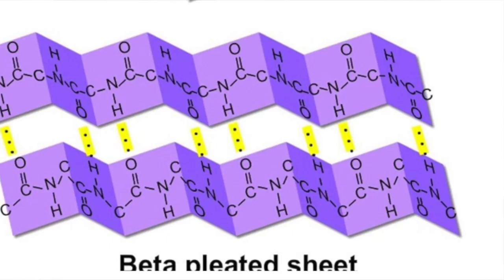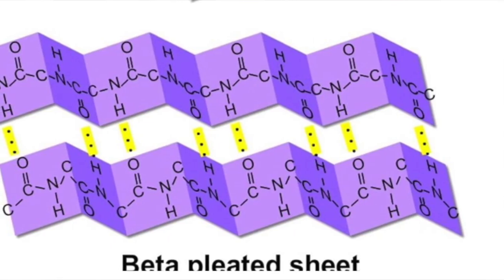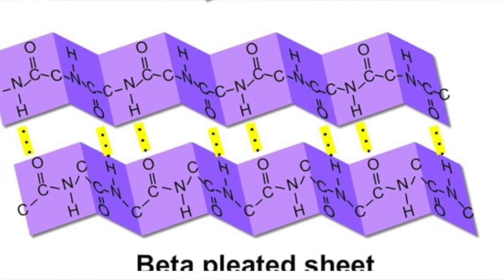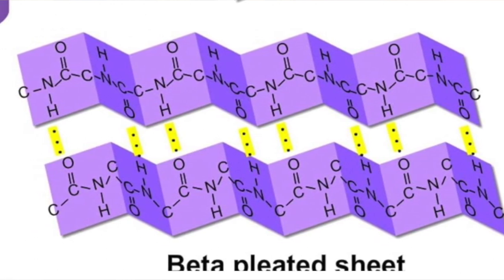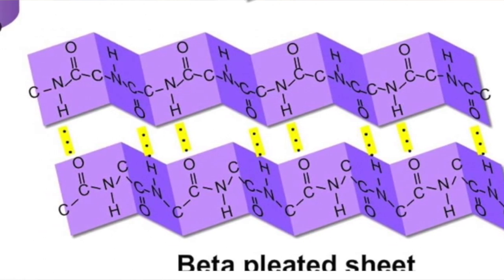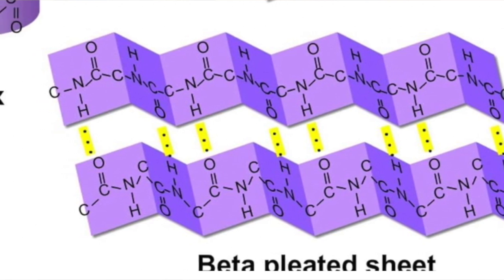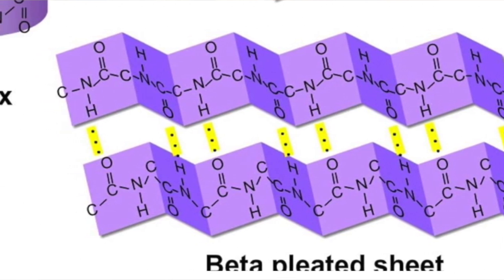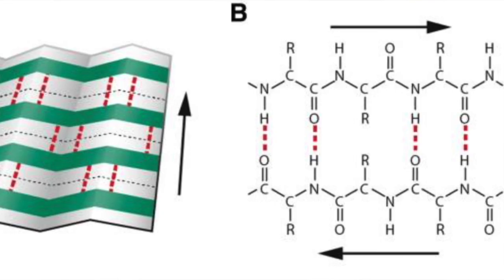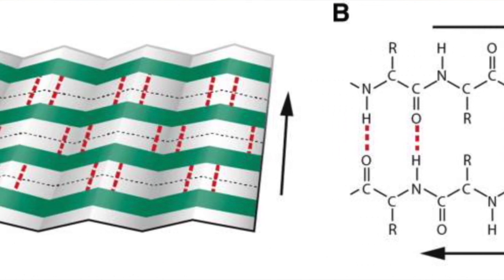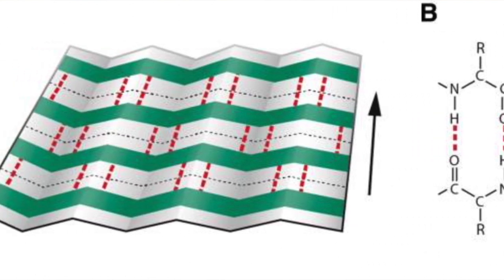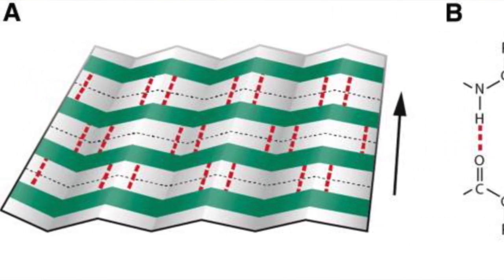Typically, amyloids will adopt what is called a beta pleated sheet structure. It's called a pleated sheet because it kind of looks like a sheet of paper, but it's not exactly straight and planar — it's got all these kind of crumples on the surface. This pleated sheet structure is much more stable than a typical peptide would be.